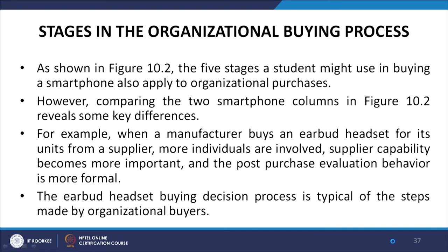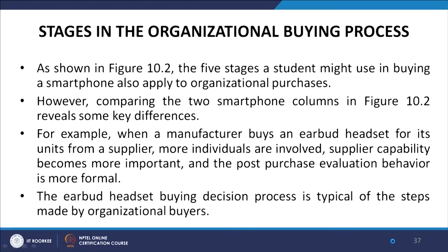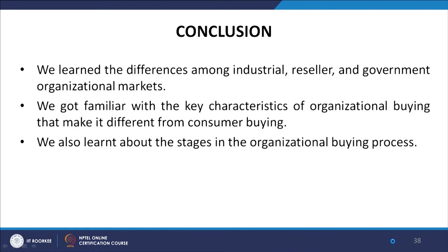The five stages a student might pass through in buying a smartphone also apply to the organizational purchase. However, comparing the two columns reveals key differences — when a manufacturer buys an earbud headset from a supplier, more individuals are involved, supplier capability becomes more important and post-purchase evaluation behavior is more formal. To conclude this module, we have learnt the differences among industrial, reseller and government organization markets; the key characteristics of organizational buying that make it different from consumer buying; and the stages in the organizational buying process.